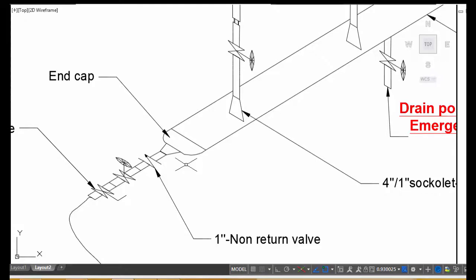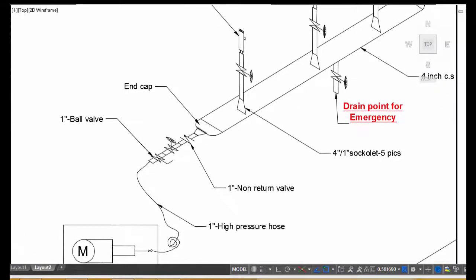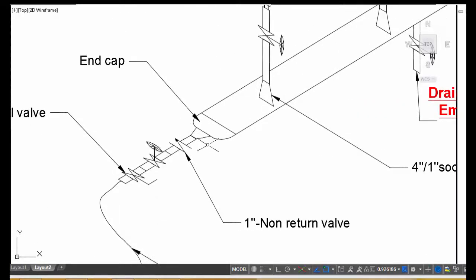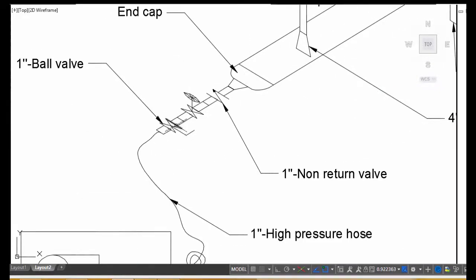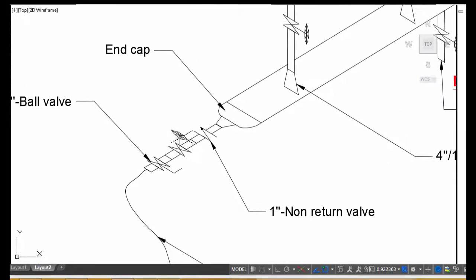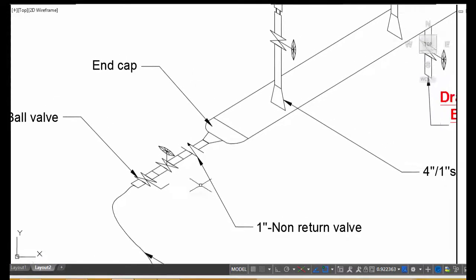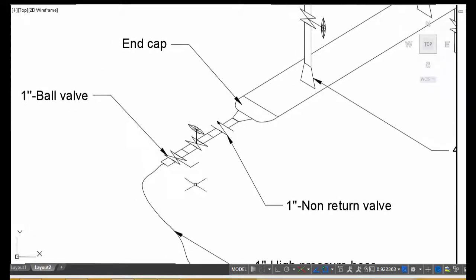Sacolette means socketolet. Here, first you put one ball valve, then second one gate valve (one inch), and next a one-inch non-return valve. This ball valve is for emergency purposes. Gate valve we cannot close immediately, so we added one more ball valve.